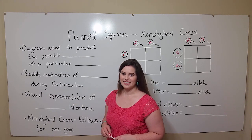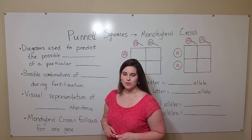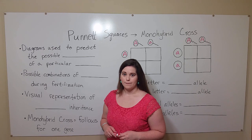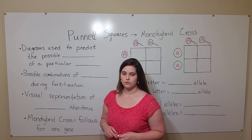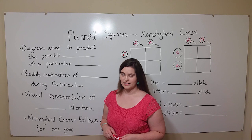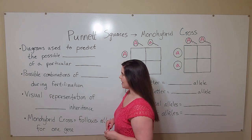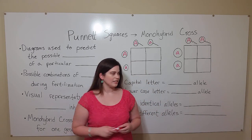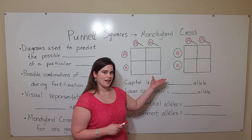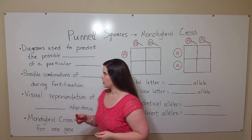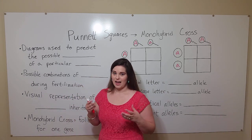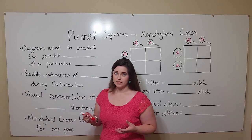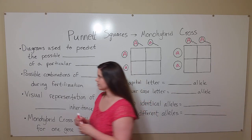Hi everyone, and welcome to Biology Professor. Today we're talking about Punnett squares, and particularly Punnett squares for monohybrid crosses. Punnett squares are basically just diagrams used to predict the possible outcomes of a genetic cross.